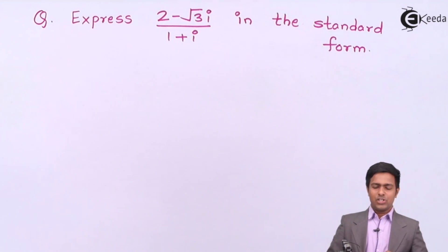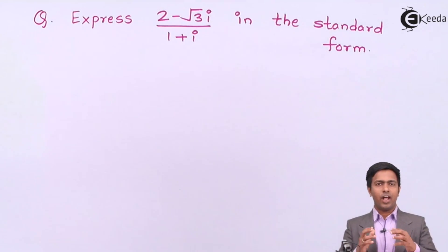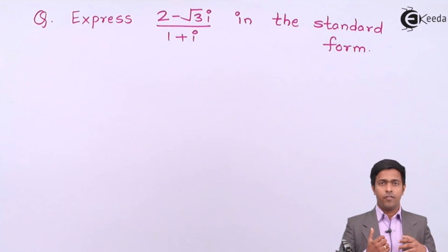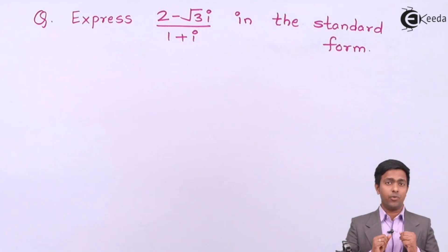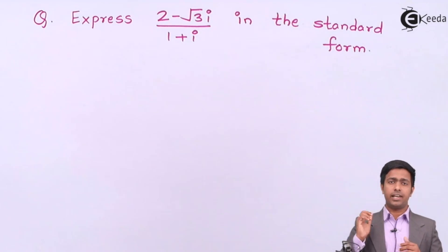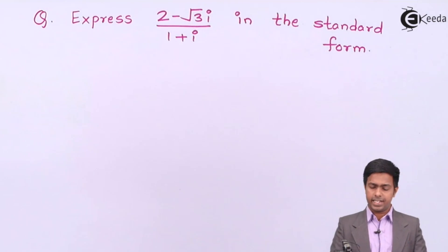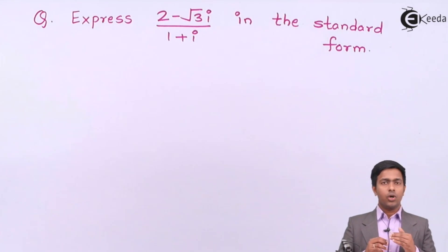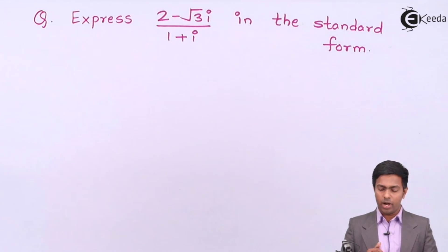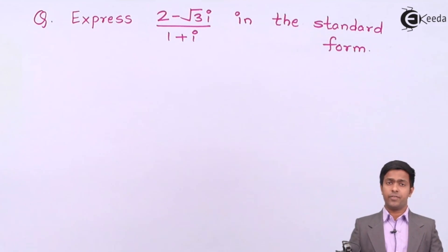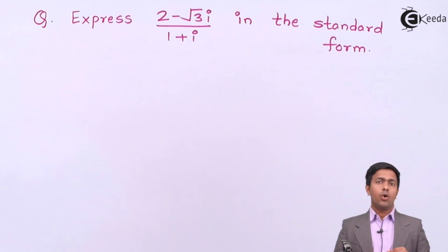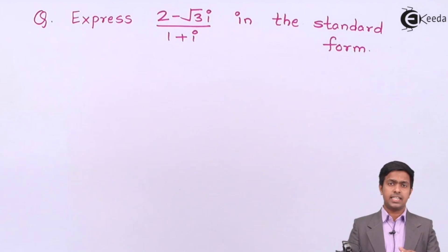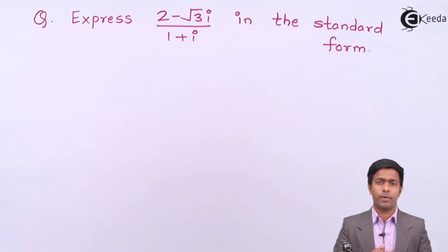We are going to solve a numerical where we have to represent the given number in the standard form. The question is: express (2 - √3·i) / (1 + i) in the standard form. Before starting the solution, can you tell me what is the standard form of a complex number?